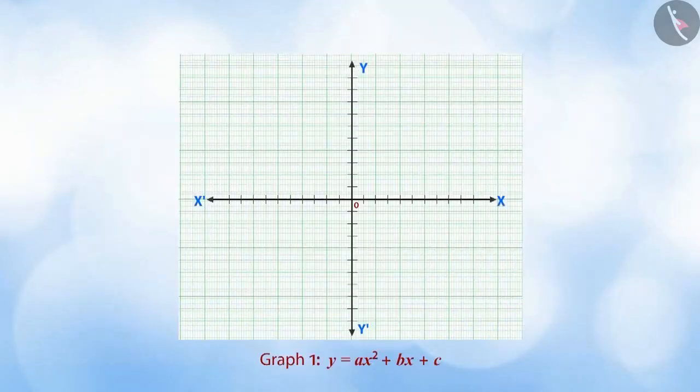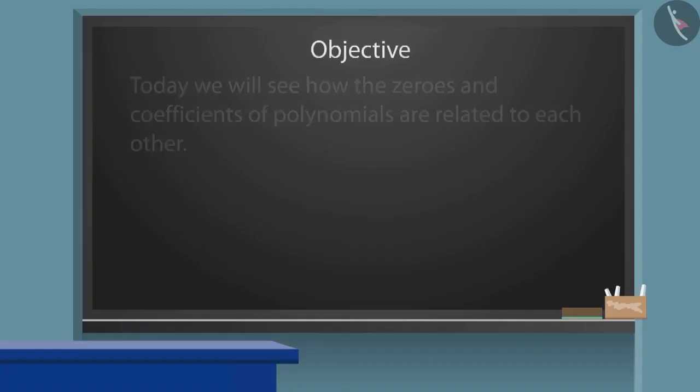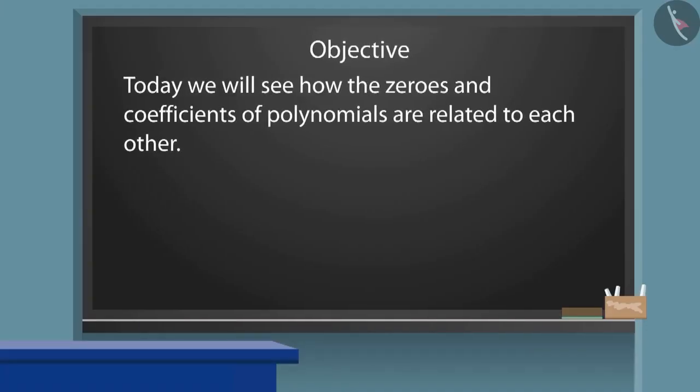Welcome to this video. So far, we have read about the geometric meaning of the zeros of a polynomial. Today, we will see how the zeros and coefficients of polynomials are related to each other.